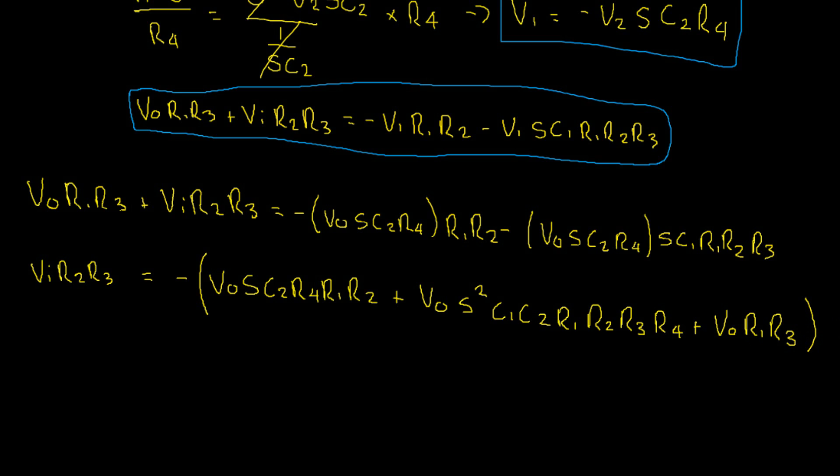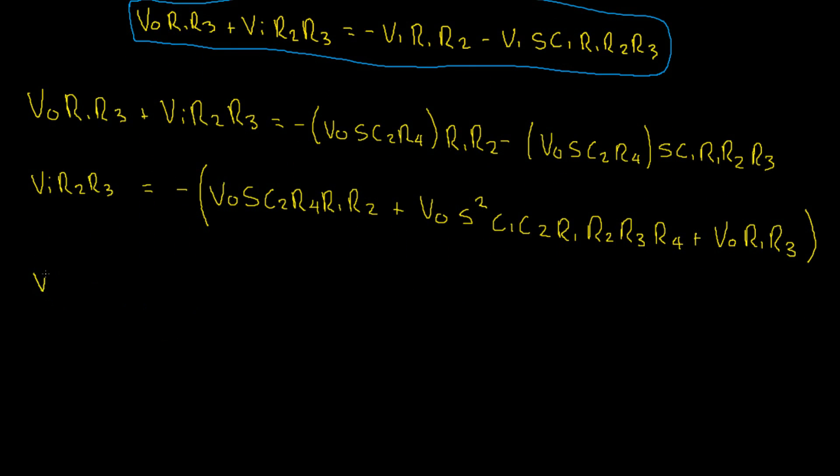Now, we can bring VO at the front of our brackets. The left-hand side remains unchanged. VI R2 R3 equals negative VO times, I'm going to put our S squared term first. S squared C1 C2 R1 R2 R3 R4, plus our S term second. S times C2 R1 R2 R4, plus our last term, which has no S, R1 R3.